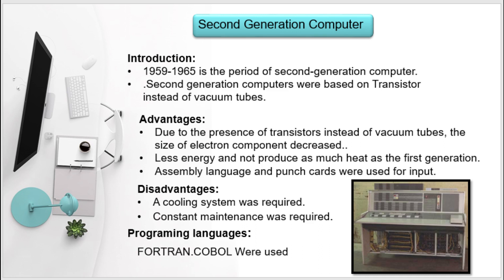In the second generation, transistors were used to rectify the problems of the first generation. Transistors produce less heat. The first generation required a cooling system to control the system, but in the second generation the cooling system implementation was different. There were still some maintenance issues, but the transistors made the system faster and smaller in size.